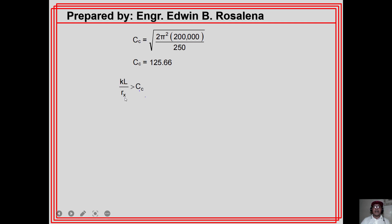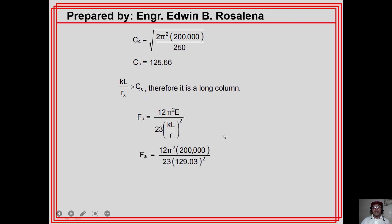Comparing KL/R = 129.03 with Cc = 125.66: since KL/R is greater than Cc, the column is long. For long columns, the allowable compressive stress is Fa = 12π²E / (23 × (KL/R)²). Substituting E = 200,000 MPa and KL/R = 129.03: Fa = 12π² × 200,000 / (23 × 129.03²) = 61.86 MPa.